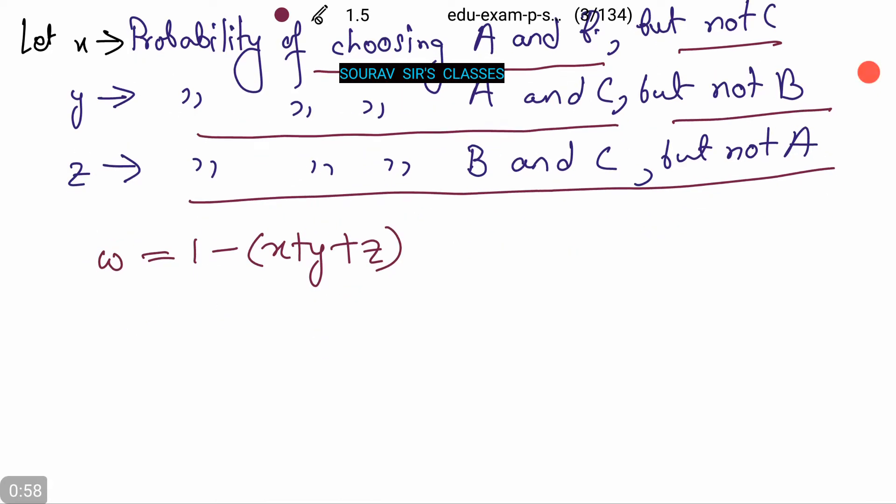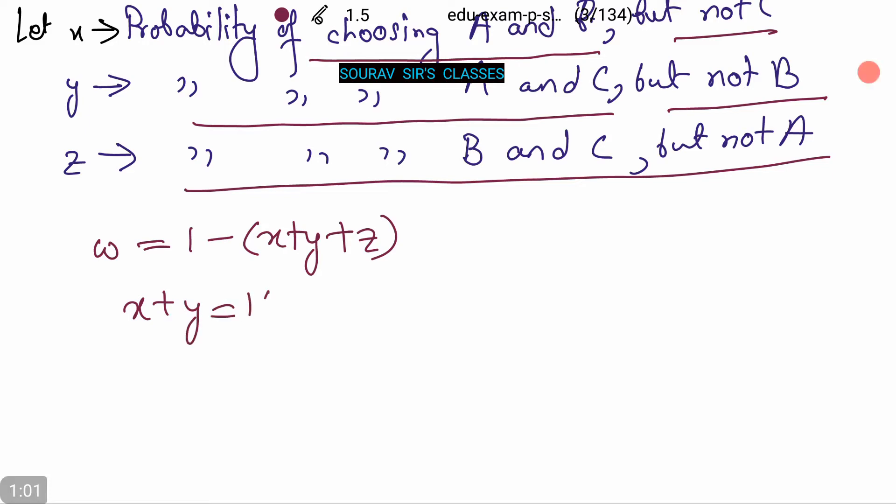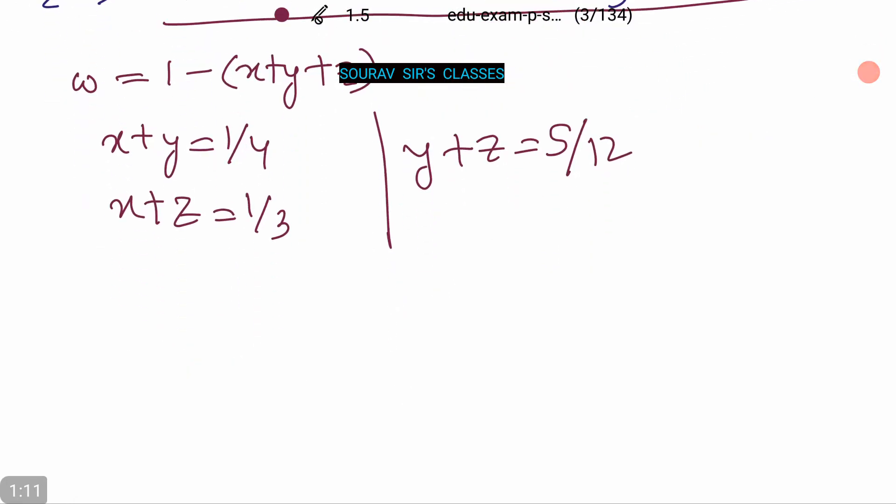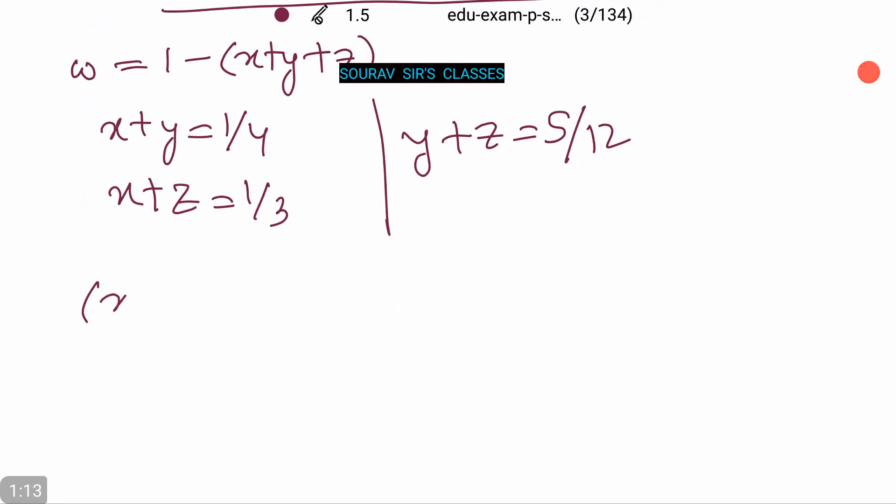Now we have X plus Y equals 1/4, X plus Z equals 1/3, and Y plus Z equals 5/12. Now adding these three equations gives X plus Y plus X plus Z plus Y plus Z equals 1/4 plus 1/3 plus 5/12.